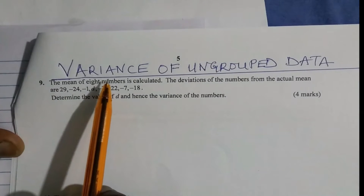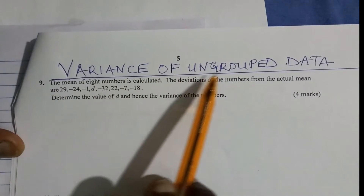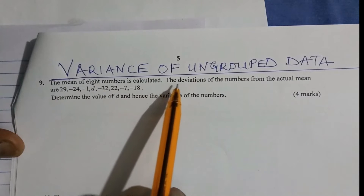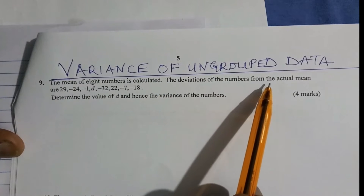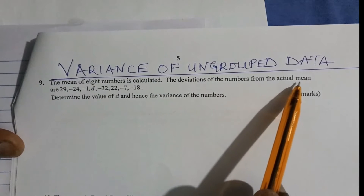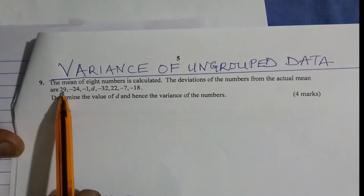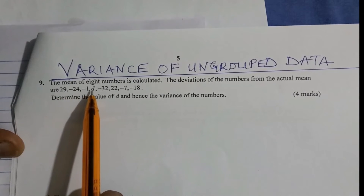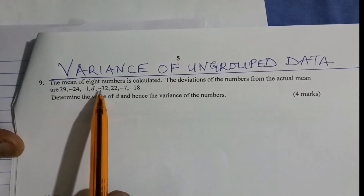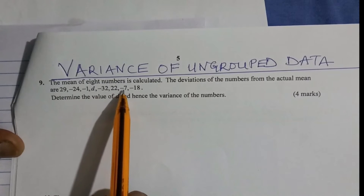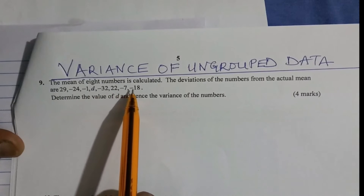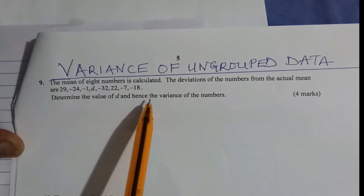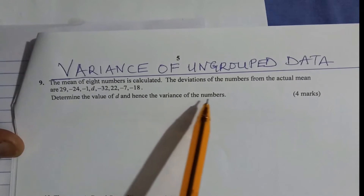Let's have this question on how to calculate the variance of ungrouped data. The mean of eight numbers is calculated. The deviations of the numbers from the actual mean are given as 29, negative 24, negative 1, D, negative 32, 22, negative 7, and negative 18. Determine the value of D and hence the variance of the numbers.